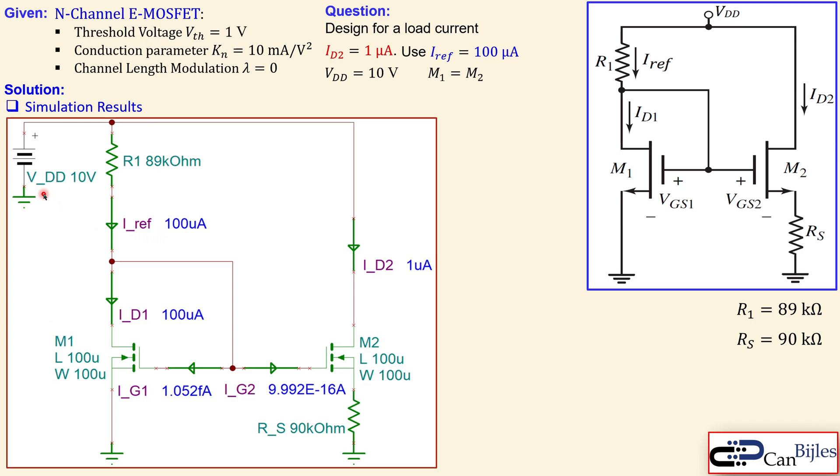This is the circuit again. VDD 10 volts, R1 here 89 kilohms, and RS exactly 90 kilohms. You see the gate currents here, which are very small, around femto amps. So this is 10 to power minus 16, even smaller. We see here the ID1, which is 100 microamps, which is also the Iref.